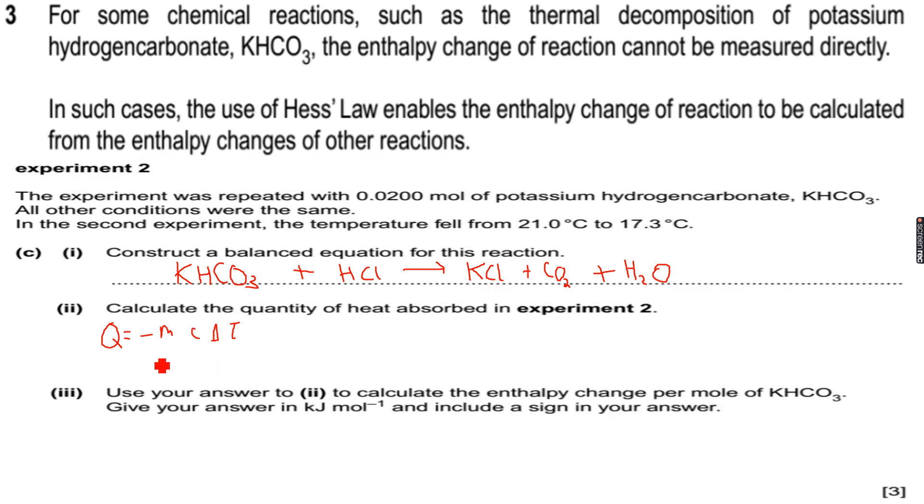Now this will be minus 30 into 4.18 into delta T, which is 17.3 minus final temperature minus initial temperature. So minus 17.3 minus 21. Now this is equal to minus 30 into 4.18 into 17.3 minus 21.